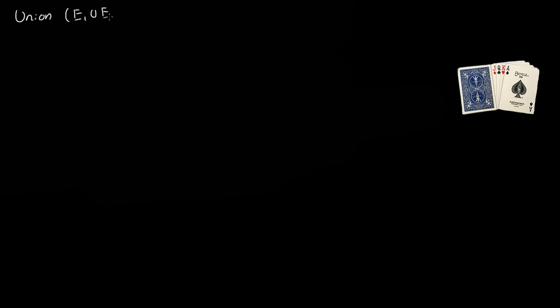This is a quick video over unions — unions for probabilities, not unions you get at work. The notation for a union is usually written as event one, U, event two. That is a union. So what exactly is a union? Well, basically it means event one or event two.